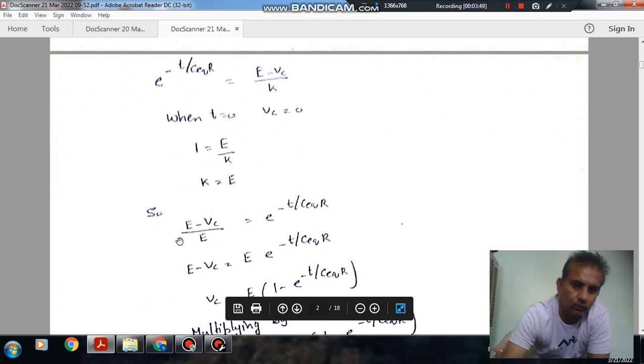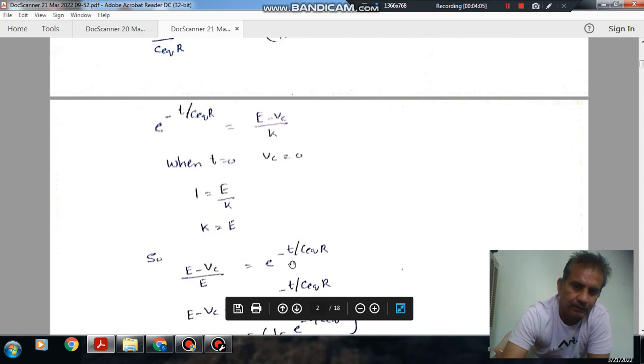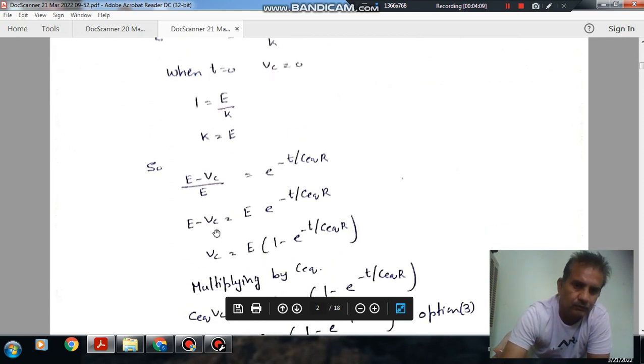So E minus V_C over E equals E raised to the power minus T over C equivalent R. This E can come to the other side, so V_C will become E bracket 1 minus E to the power minus T over C equivalent R.